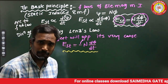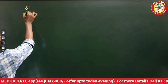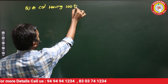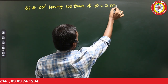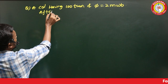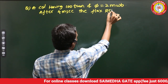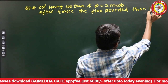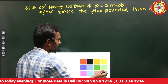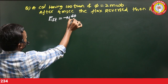This is the basic principle of transformers. For example, if they ask you a question like this: a coil having 100 turns and a flux of 2 mWb, after 4 ms the flux is reversed. What is the Static Induced EMF? The Static Induced EMF equals minus N · dΦ/dt.